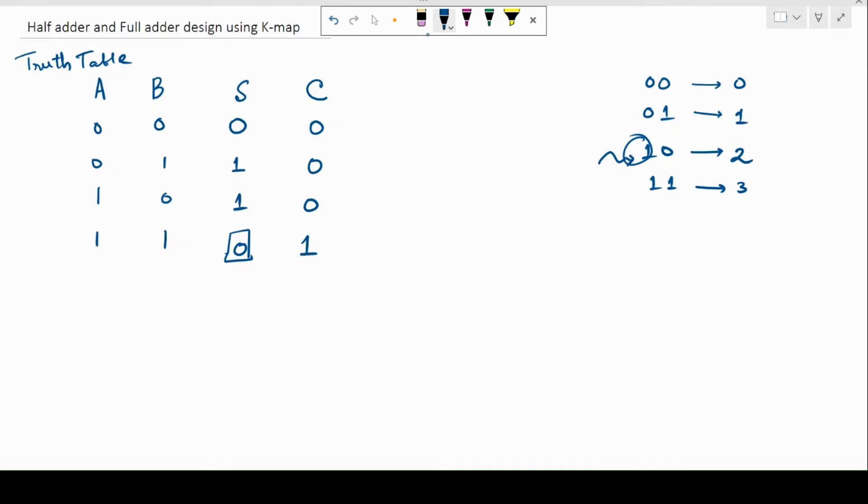So this is how we write out the truth table for a half adder. Now, there are going to be two outputs. If I look at my half adder as a black box, then I am going to have two inputs here, the two numbers that is A and B. And when I add it, I'll get two outputs.